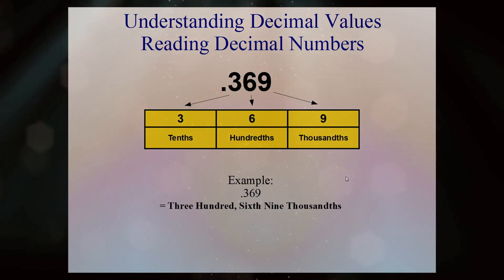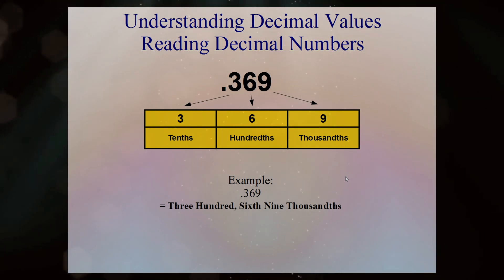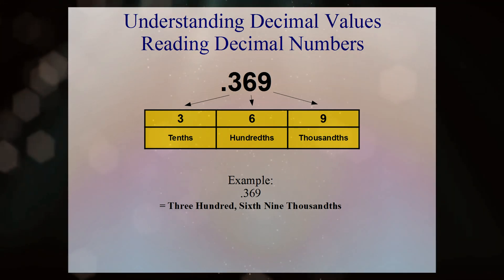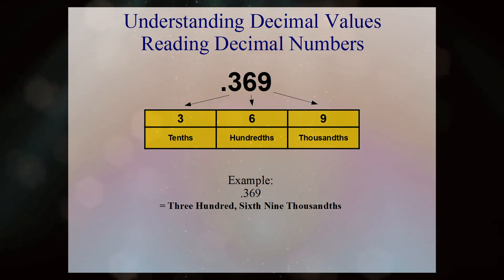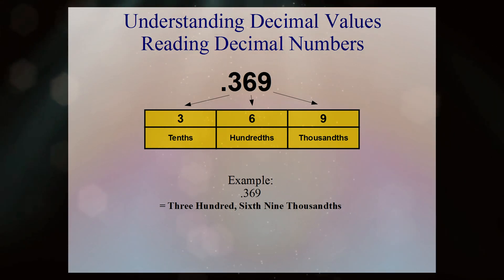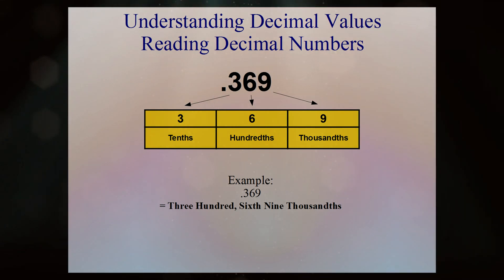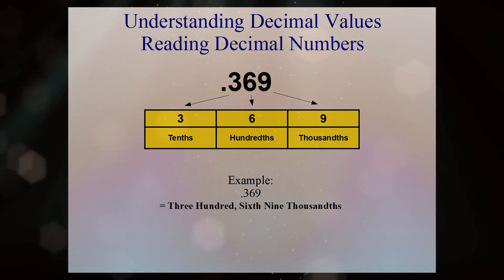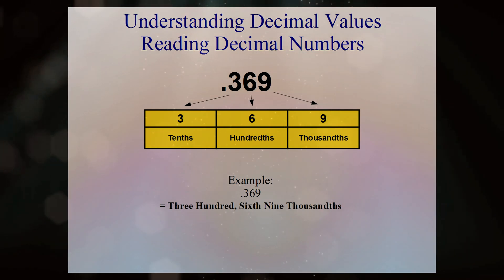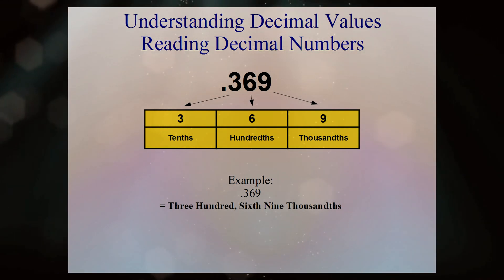This next one uses the same numbers but we've reduced it to three digits to the right of the decimal point. Right away we can see that three digits to the right means this will be a thousandths number. So if we say this as a whole number, this is three hundred and sixty-nine thousandths.